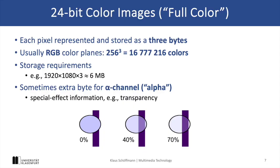Full color images are represented with 24 bits for RGB. We have three channels or components for red, green, and blue, each using 8 bits per pixel. This totals to 16.7 million colors, which is also known as true color. An HD image using this format would require approximately 6 MB for storage.